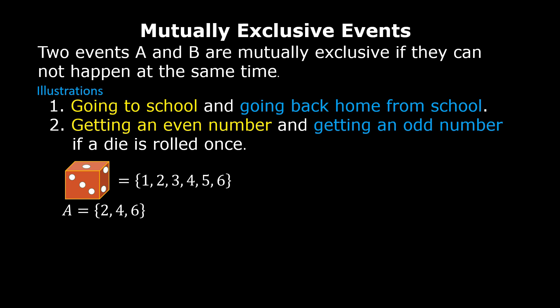The second event is getting an odd number. Let us represent this by B. The possible outcomes in event B are one, three, and five.